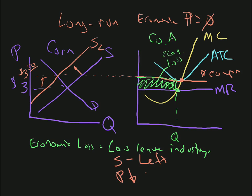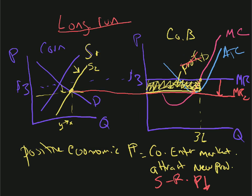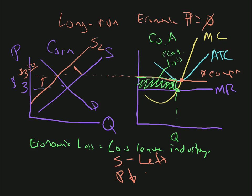Let's review. Zero economic profits: no one enters or exits the market — we're at long-run equilibrium. Something changes and this company has profits — companies start to come in, supply shifts to the right, attracting new producers, price goes down, and we end up back at zero economic profits. If a company is suffering a loss and there are many companies like it, companies get out of the business and supply shifts to the left.